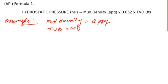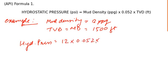I would say TVD equals MD and it is 1500 feet. You have to find hydrostatic pressure at this point. So what will it be? Hydrostatic pressure equals mud density, that is 12 PPG, multiplied by the constant factor 0.052, multiplied by TVD 1500 feet. It will give you 936 PSI.